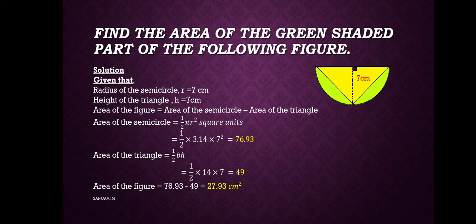First, we have our formula for the area of the semicircle. This equals ½πr² square units. We know the value of π, so substituting those values, we get 76.93. The area of the triangle equals ½bh. So b is 14 and h is 7.